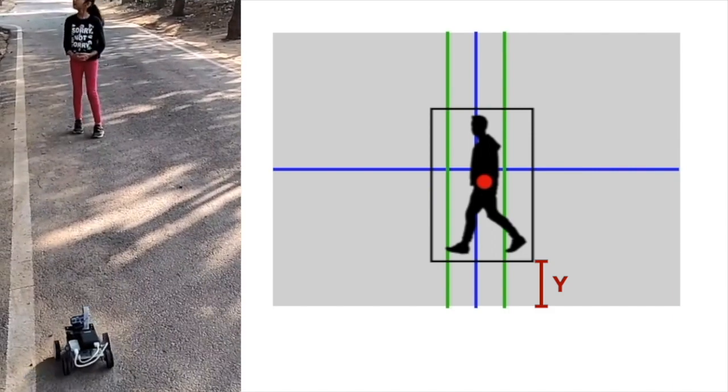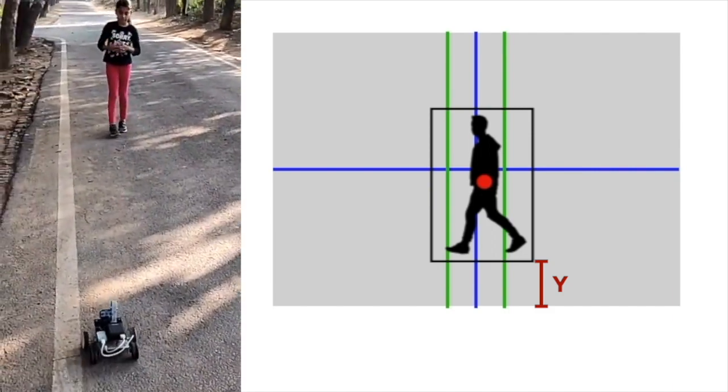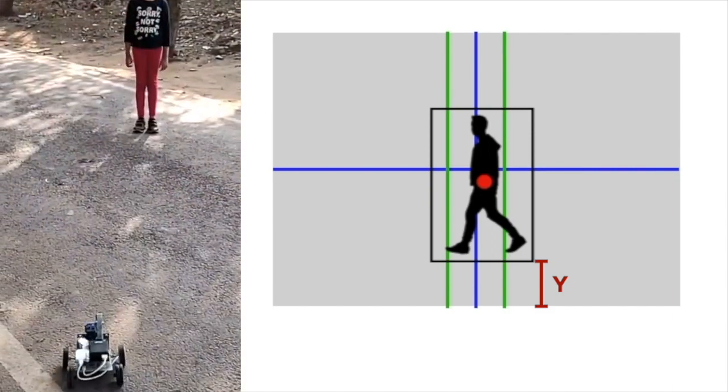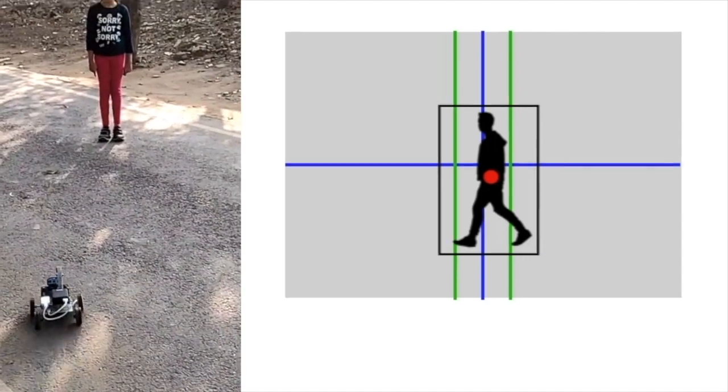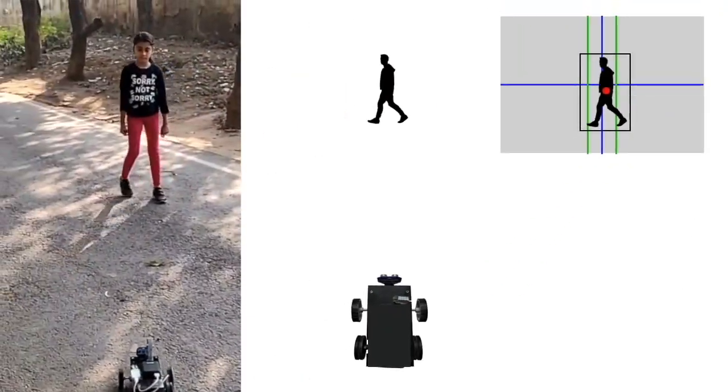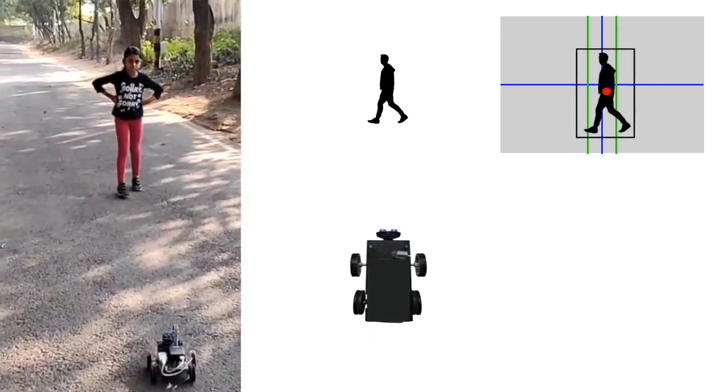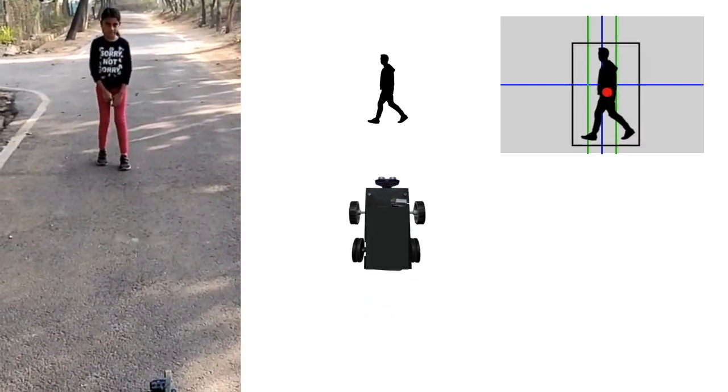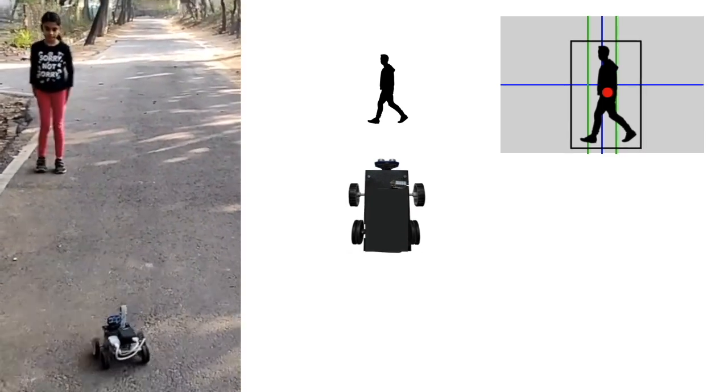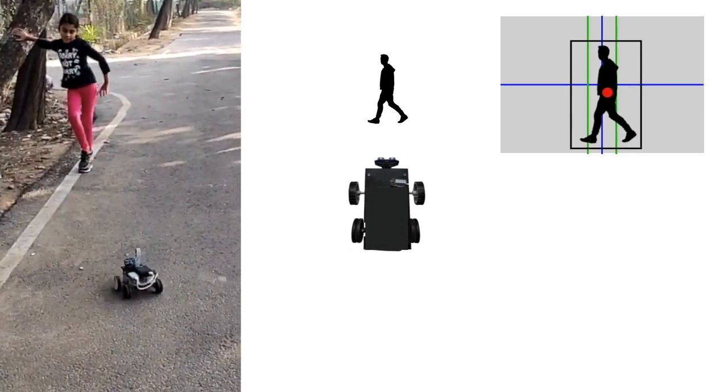If this distance is more than the predefined threshold, the robot moves forward. When the robot moves forward, size of the bounding box increases and bottom edge of the bounding box approaches the bottom edge of the frame. At the set threshold, the robot stops moving.